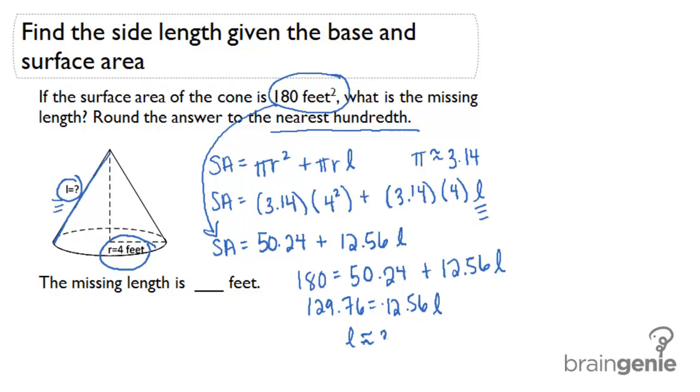10.33. So the slant height or the height of the side of the cone is approximately 10.33 feet.